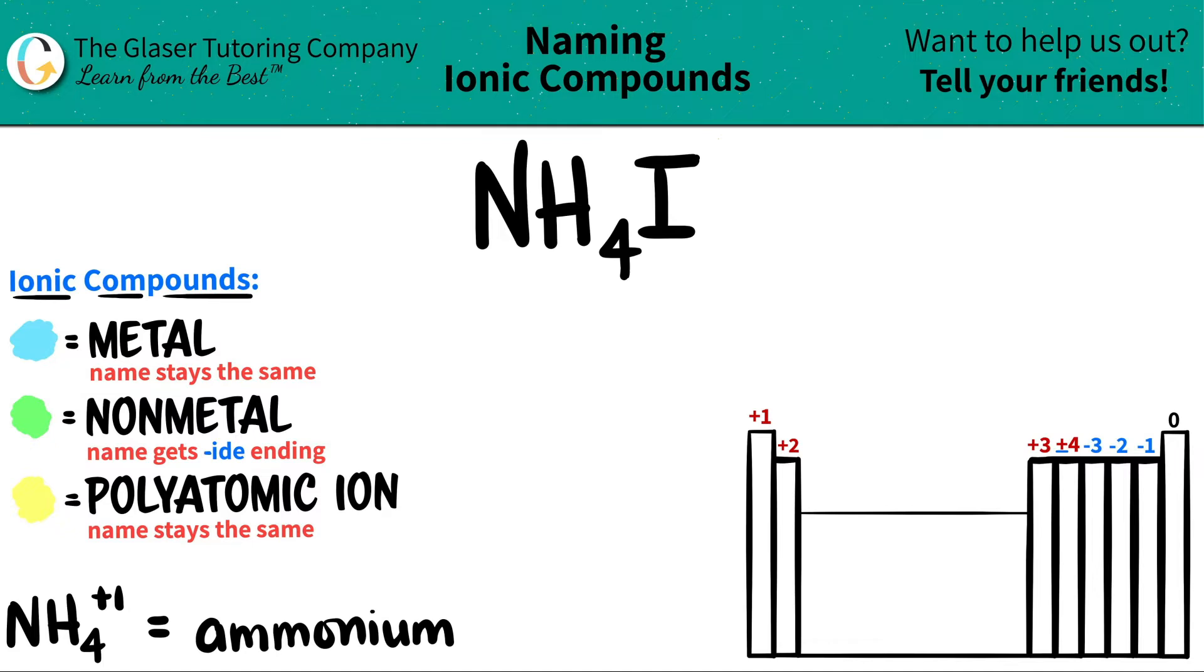But however, if you see that you have three or more different elements—we do have three elements: nitrogen, hydrogen, and iodine—if you see that you have three or more elements, you know that you're dealing with at least one polyatomic ion. And if you have a polyatomic ion, it will be classified as an ionic compound.